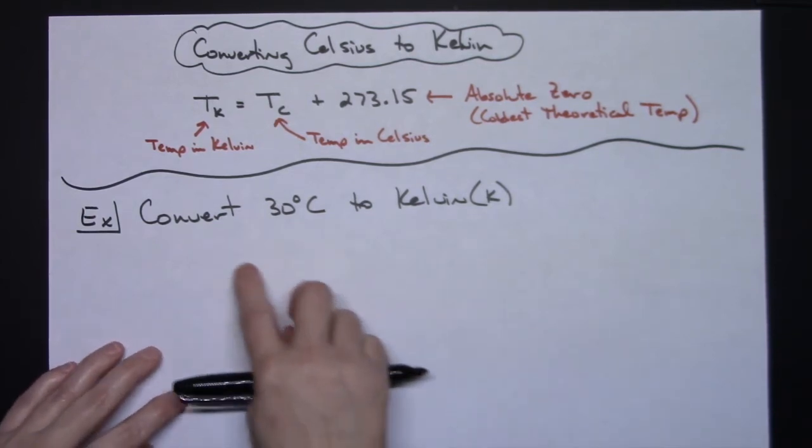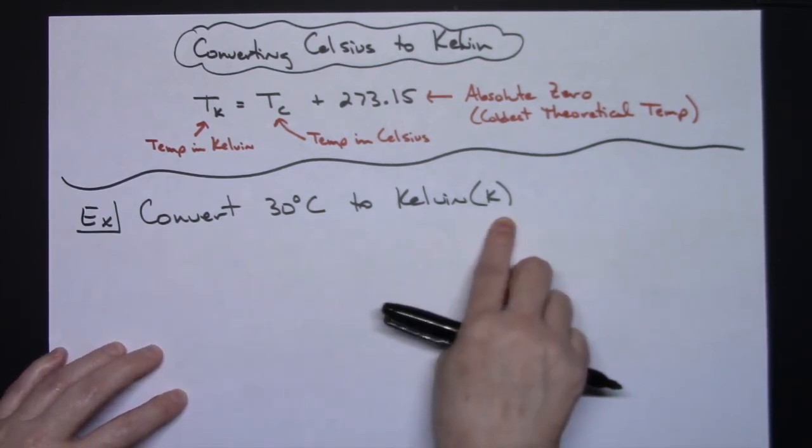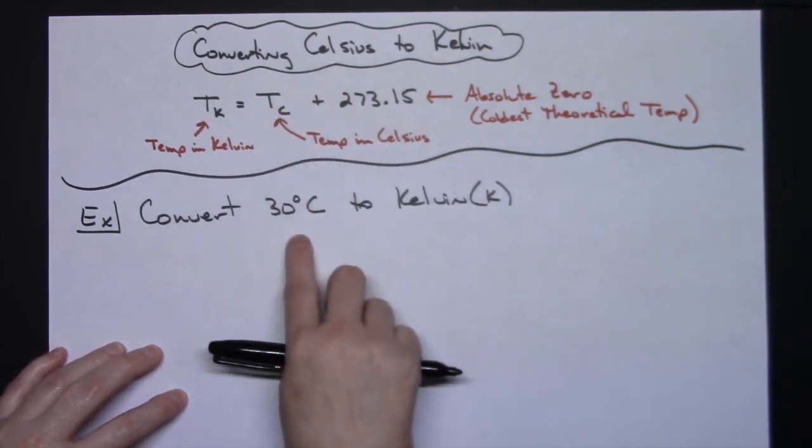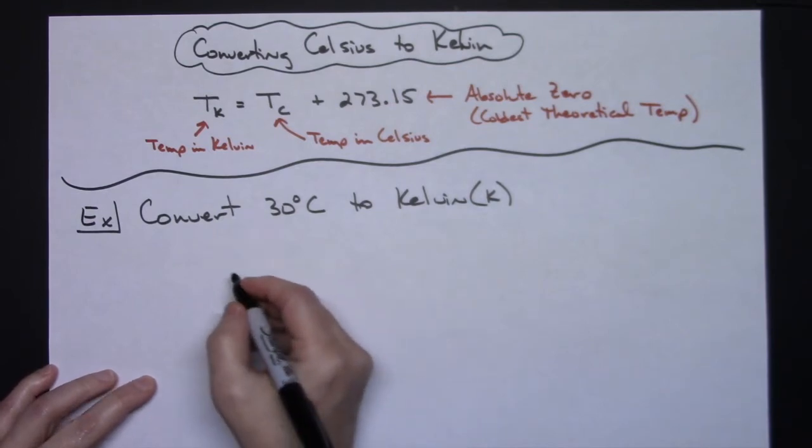Okay, so just a straight conversion here. I'm going to convert 30 degrees to Kelvin, so I'm going to use this formula and I'm going to replace my temperature in Celsius with 30 degrees Celsius there.